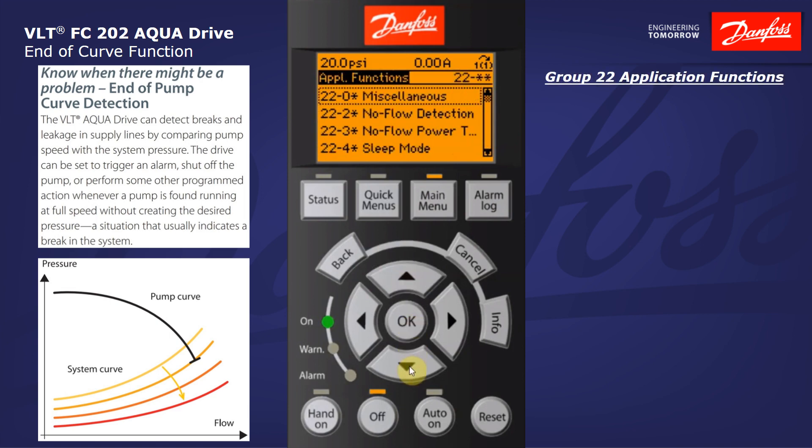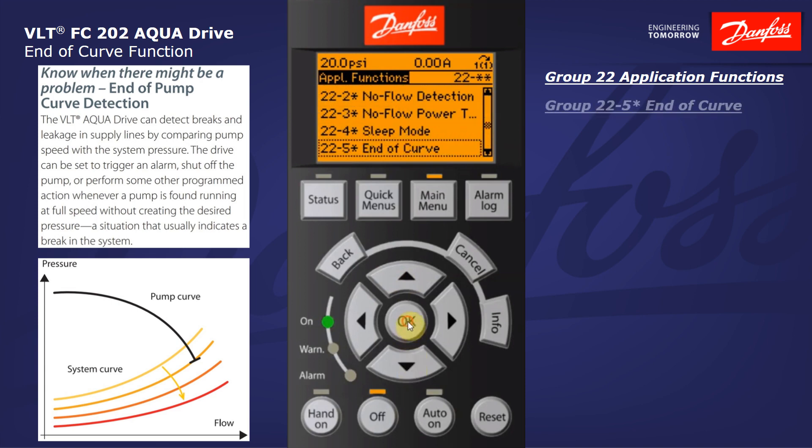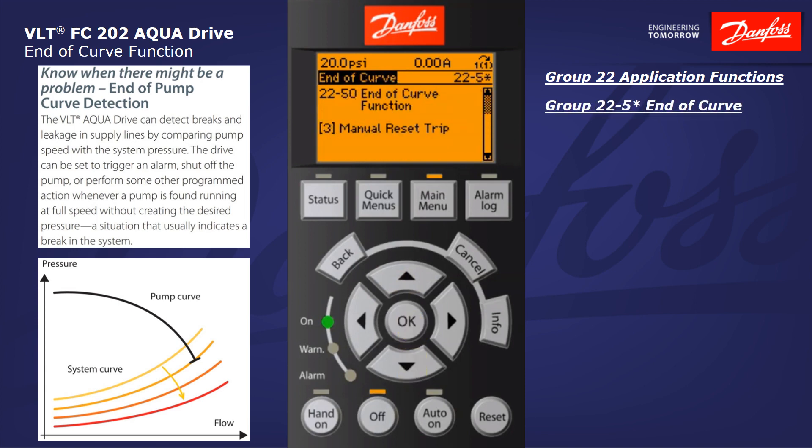From there we'll scroll down to 22-5 end of curve, and here we'll find the three parameters that are required to set this up.